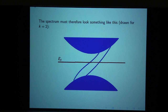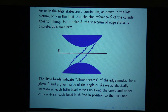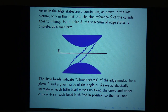The edge states are drawn as continuous, but you have to remember that since the cylinder has finite circumference, the edge states really have a discrete spectrum. Each little bead on a blue line going from below to above represents an edge state with a properly quantized momentum around the circle for some value of alpha. When we adiabatically increase alpha by 2 pi, each bead moves and takes the place of the next one — alpha shifts the allowed values of the momenta, and when you increase alpha to alpha plus 2 pi, each state takes the place of the next.